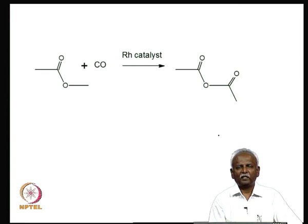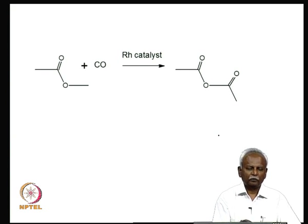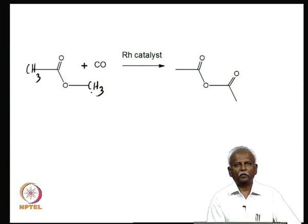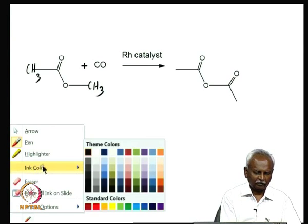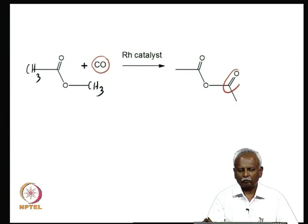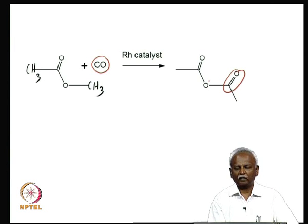One last example of an insertion reaction: methyl acetate is converted to acetic anhydride simply by insertion of a molecule of carbon monoxide. No organic catalyst can bring about this transformation — the chemistry is completely unique to organotransition metal chemistry using rhodium. It is important to understand such insertion reactions where there is hardly any polarity change driving the transformation; it is primarily the ability of the metal that enables insertion of a neutral organic moiety.